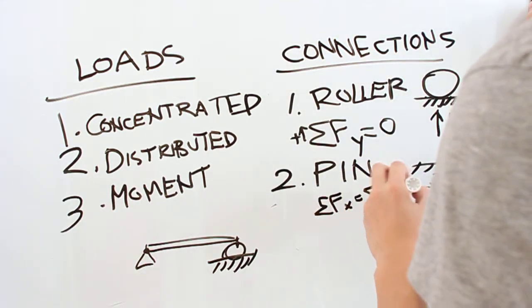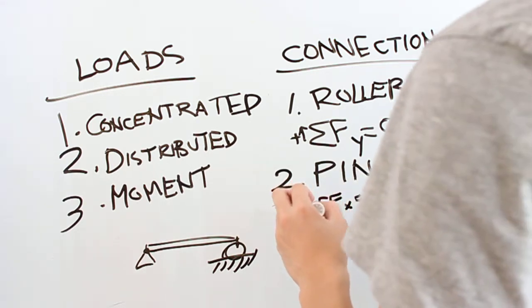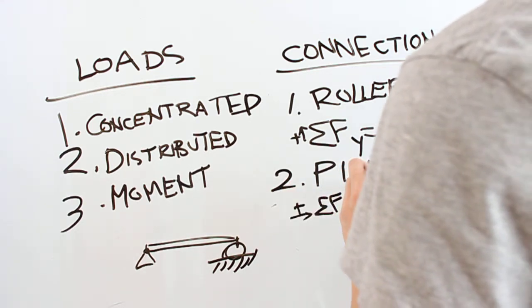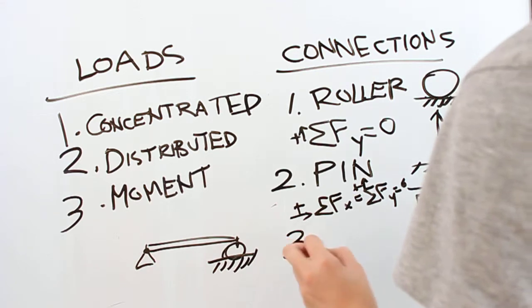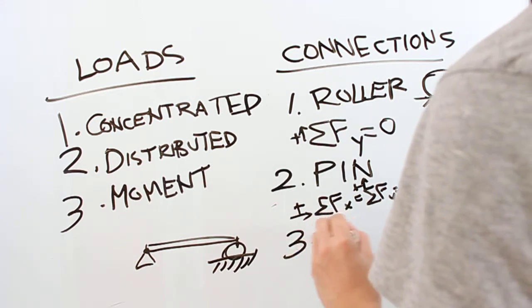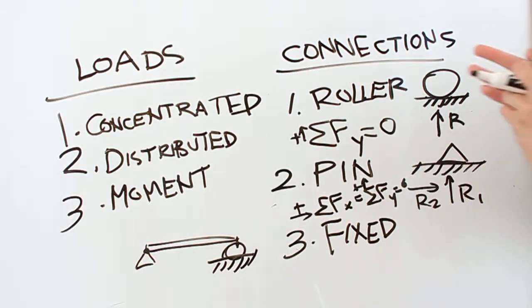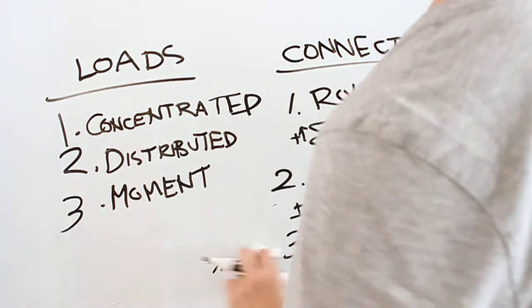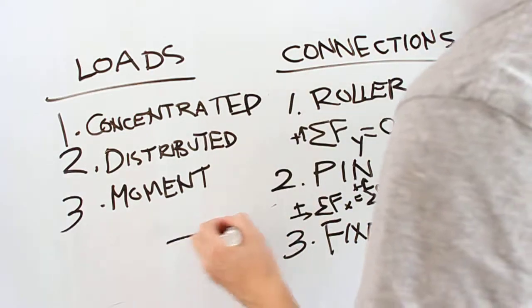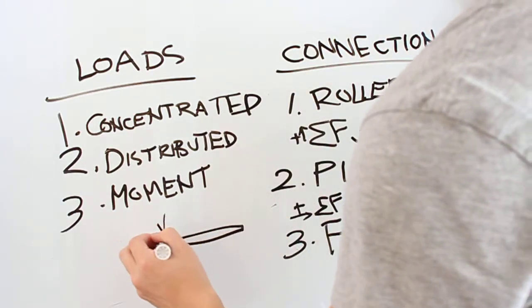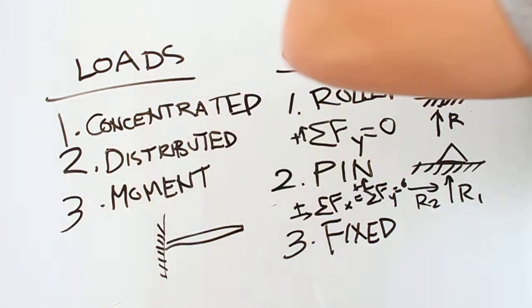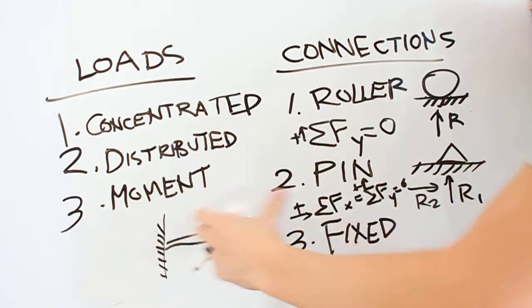And finally you have a fixed joint, which is completely, think of a weld in a steel frame construction. Think of a cantilever directly into a building. And what this means is not only can it not move, translate, it can't rotate about this point.